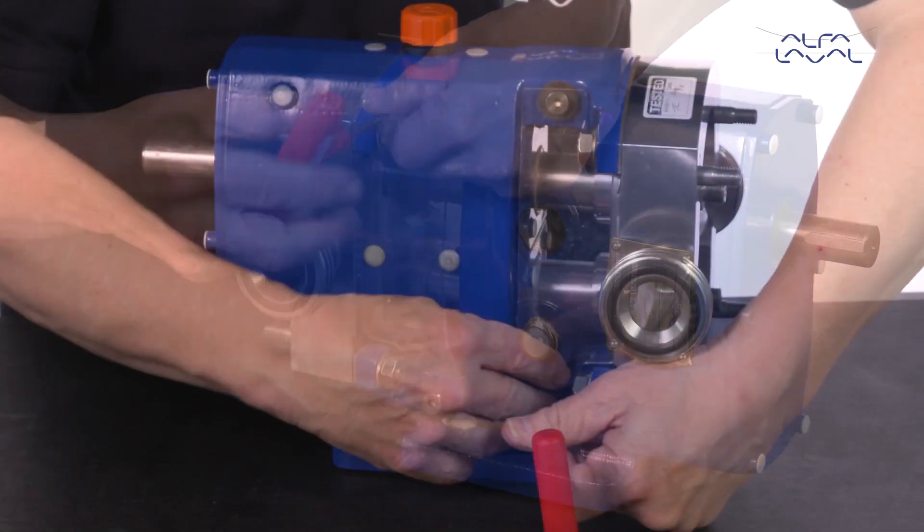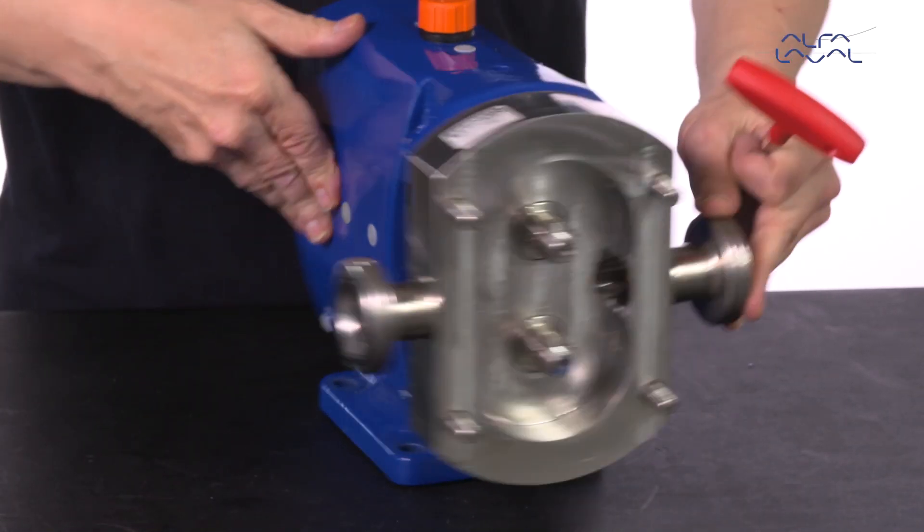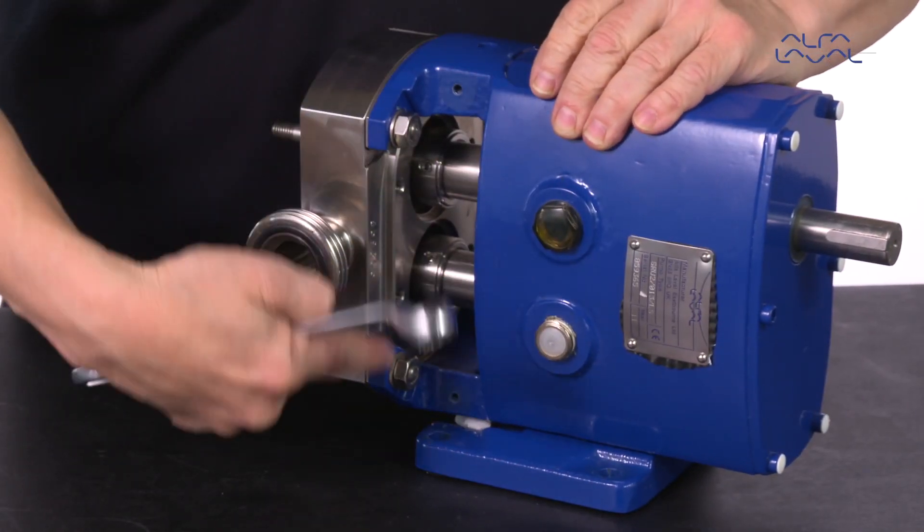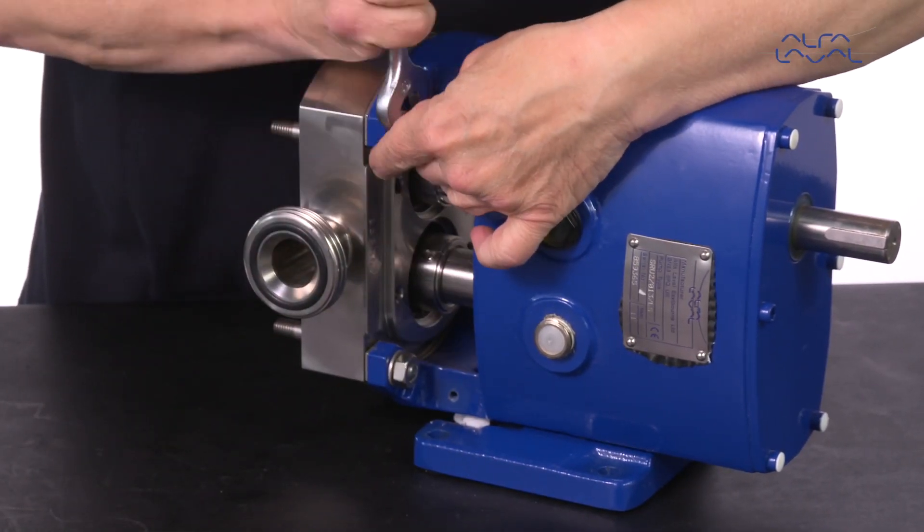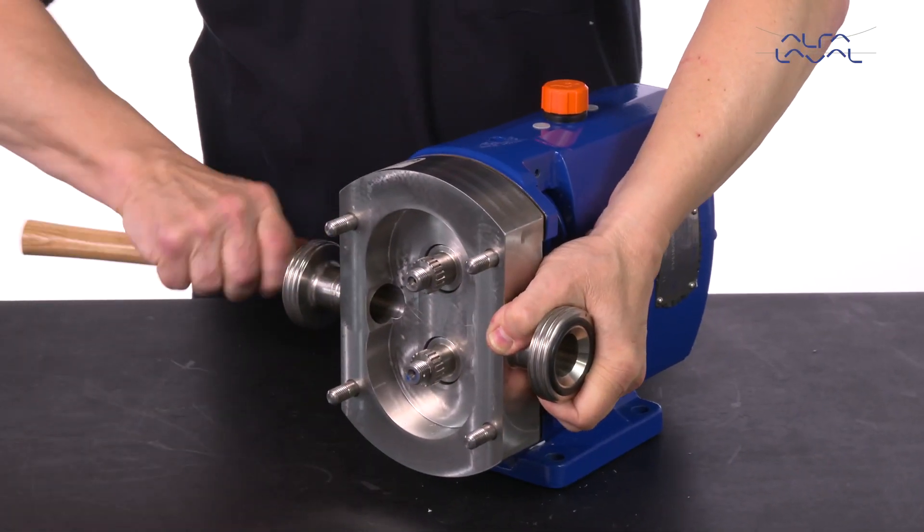Remove the safety guards and loosen the screws. Use a rubber mallet to extract the pump from the gearbox.